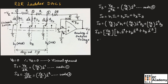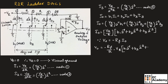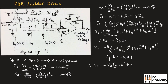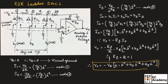Since we can write output voltage V0 is equal to minus Rf multiplied by I0, substituting the value of I0 we get V0 equal to minus Rf/R × VR × (B1×2⁻¹ + B2×2⁻² + B3×2⁻³). If we take Rf equal to R, then the output voltage simplifies to minus VR multiplied with B1×2⁻¹ plus B2×2⁻² plus B3×2⁻³. This is the expression for output voltage V0 of a 3-bit R2R digital to analog converter.